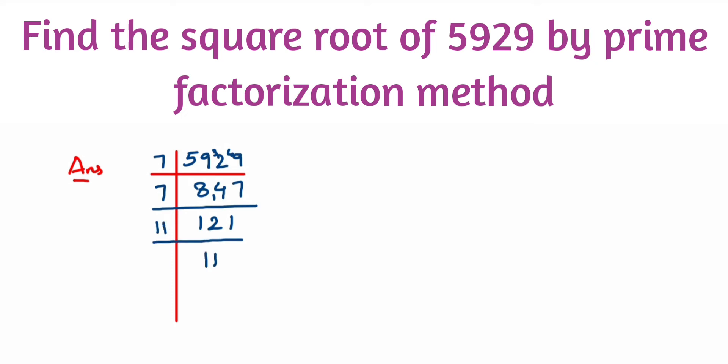11 ones are 11. So we'll find out the square root. 5929 can be written as 7 × 7 × 11 × 11. So we're going to start pairing up.